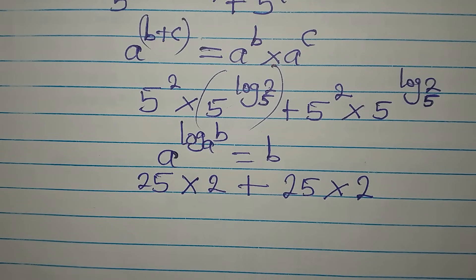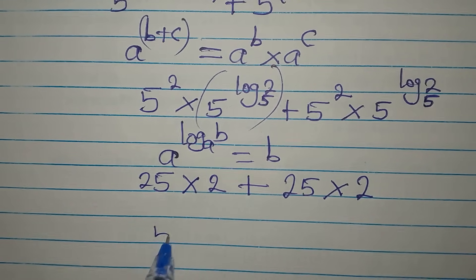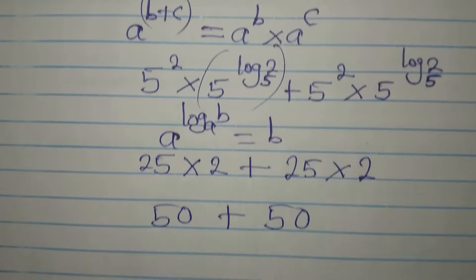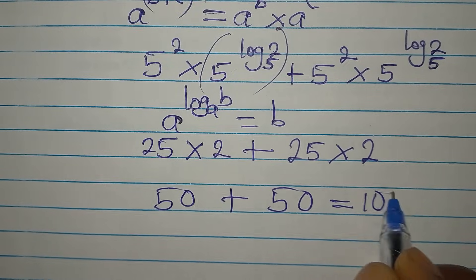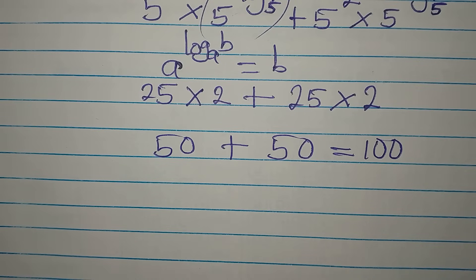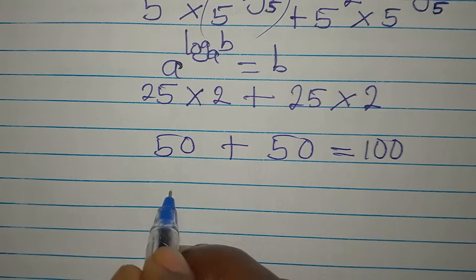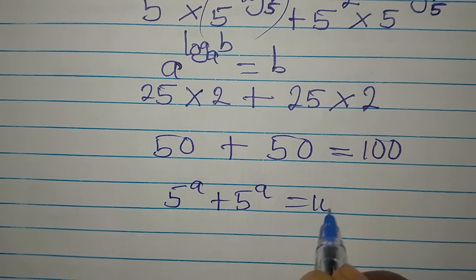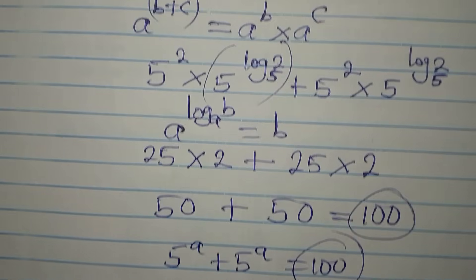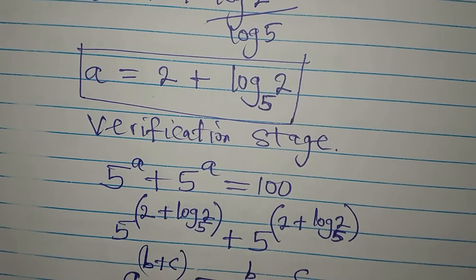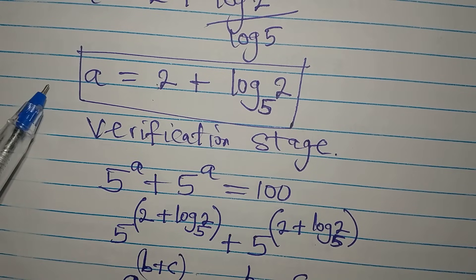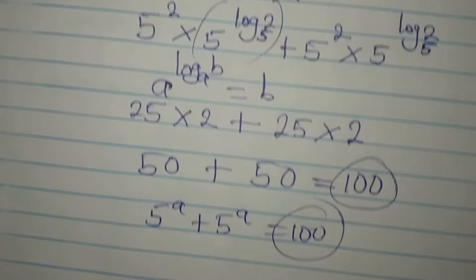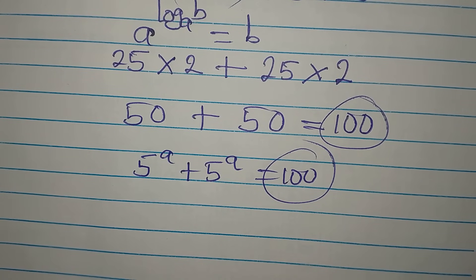Applying BODMAS — multiply before you add — 25 times 2 is 50, plus 25 times 2 is 50 again, and 50 plus 50 equals 100. Since the equation requires 100 on the right-hand side, we have confirmed that a equals 2 plus log 2 to base 5 is correct.